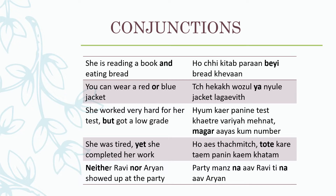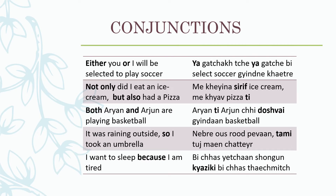Neither Ravi nor Aryan showed up at the party: party manz naav ravi th naav aryan. Na is 'neither' or 'nor' — both neither and nor will be 'na'. Naav means 'to come'.